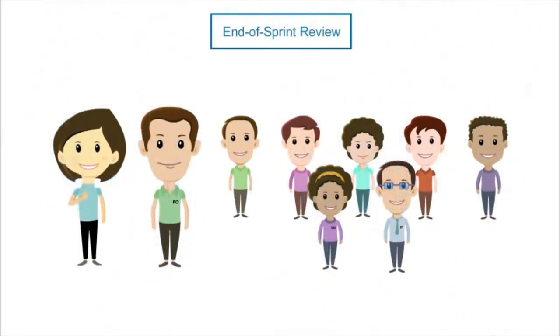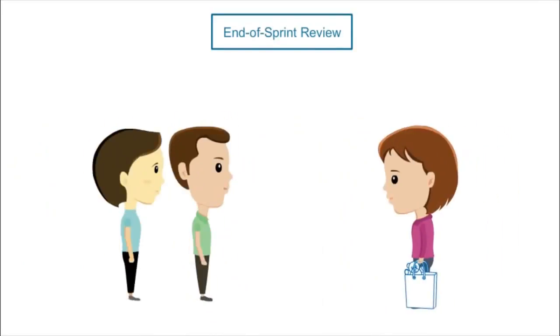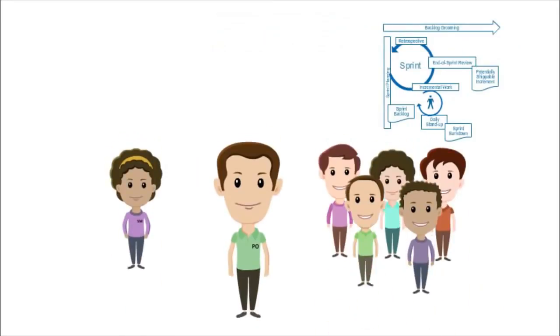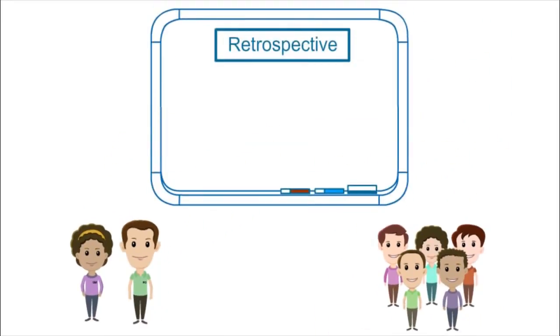At the end of the sprint, the team delivers the sprint's deliverable to Mary in a sprint review meeting. After reviewing everything, Mary, Rajesh, and the scrum team all agree that the website is ready to go live. Mary's toy store is now online.